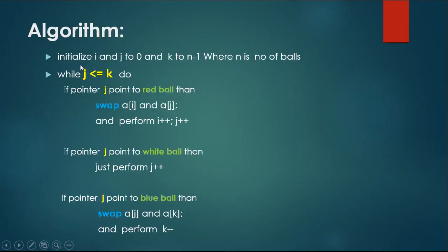Algorithm: Initialize i and j to 0 and k to n-1, where n is the number of balls. While j is less than or equal to k: if pointer j points to a red ball, swap a[i] and a[j] and perform i++, j++. If pointer j points to a white ball, just perform j++. If pointer j points to a blue ball, swap a[j] and a[k] and perform k--.